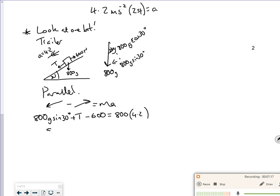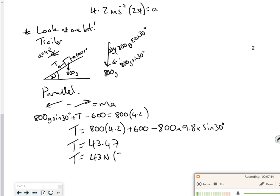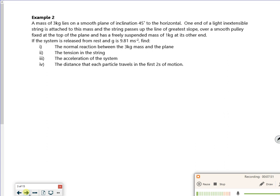So do some switching around. I've got to keep T over here one time or so. So I've got the 800 times 4.2, add on the 600, take away the 800g sine 30. So once again, make sure you put a better answer down and a rounding answer. So they've got 43.47 this time. So you've got a better answer, rounding to 2 sig fig will be 43 to 2 sig fig. And then that's that one over.